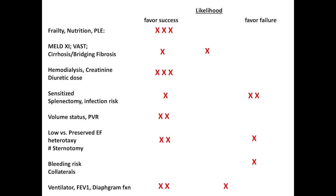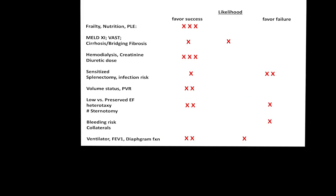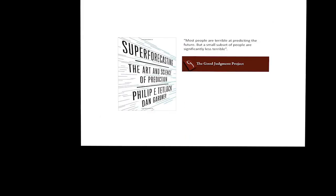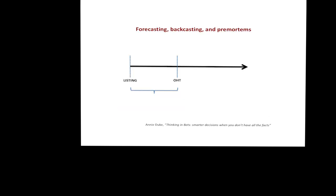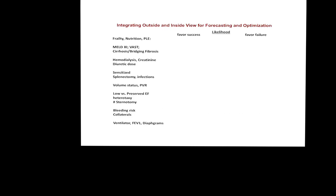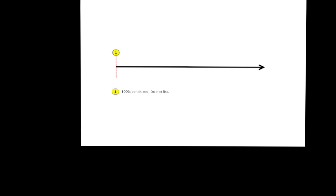Factors favoring success: she's not frail, no PLE, nutrition intact, MELD and VAS scores are reasonable, creatinine is perfect, and she has her spleen so we can work with desensitization. Her low EF is actually favorable — preserved EF is a tougher Fontan. She doesn't have heterotaxy. Risk factors: multiple sternotomies, high bleeding risk as a Fontan, unknown collaterals, and FEV1 of 49%. Looking at her antibodies, I try something gentle like IVIG and rituximab first. I don't list her because there's zero chance of transplanting her at 100% sensitized.